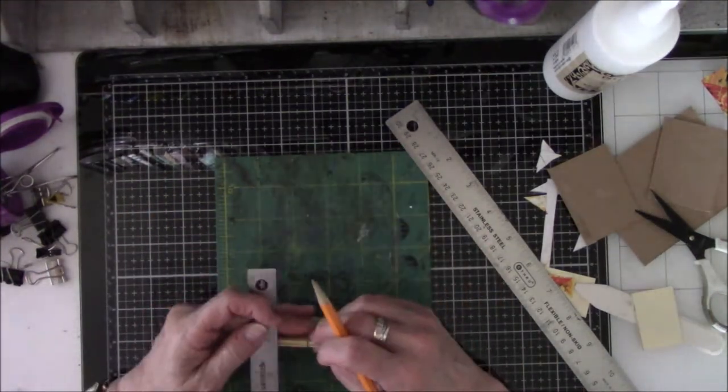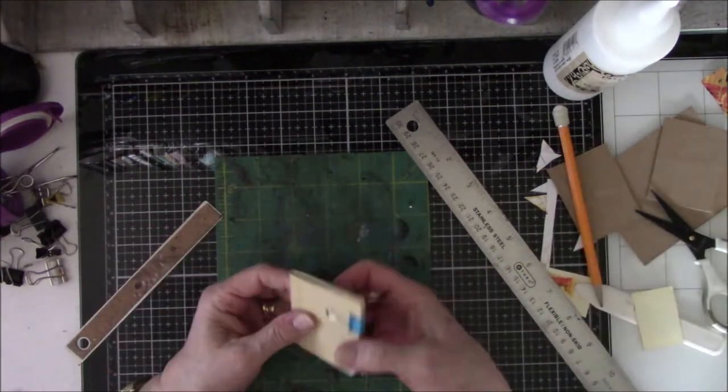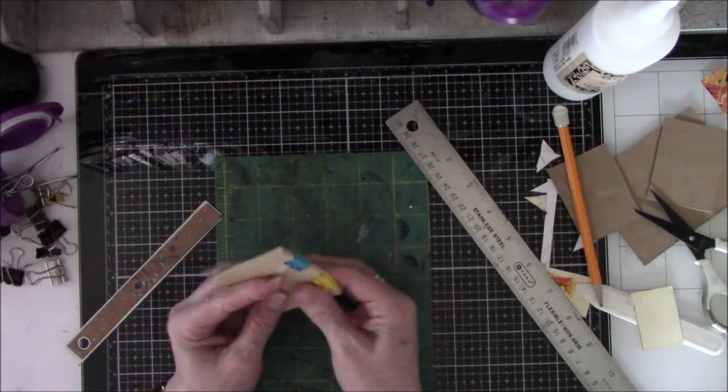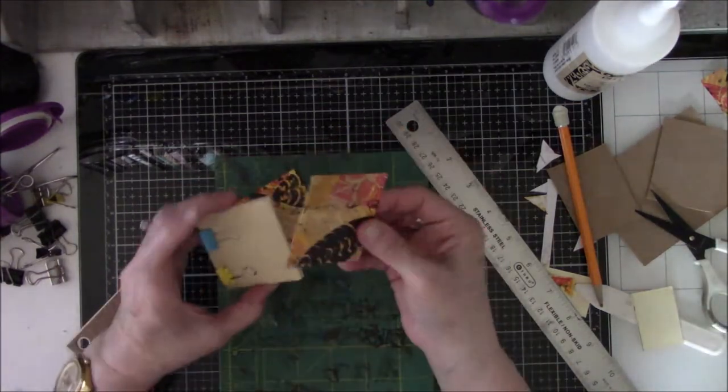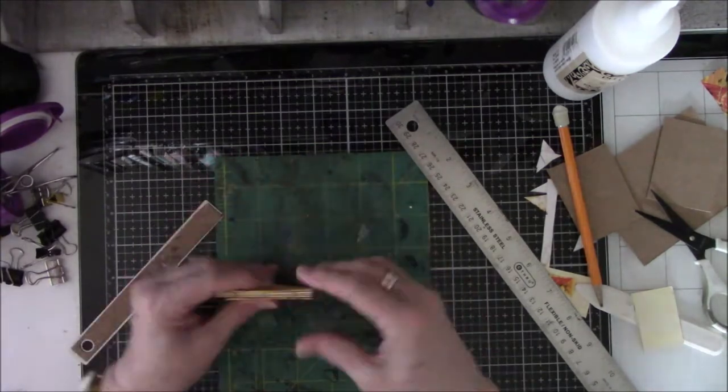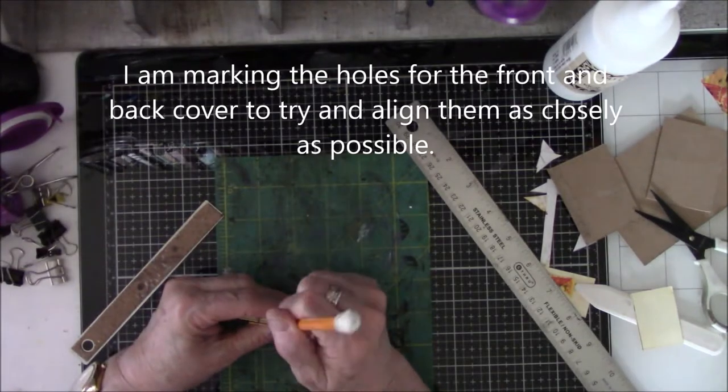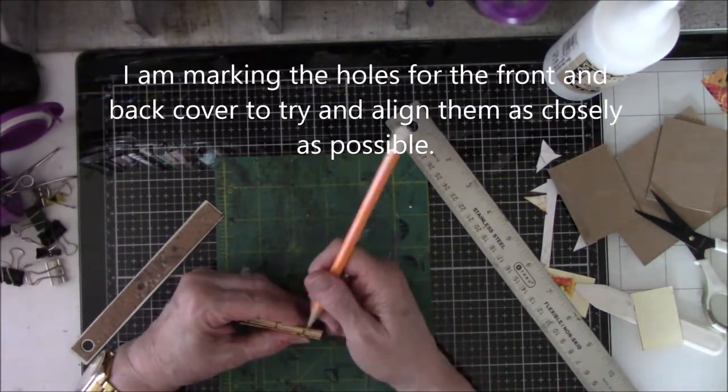There I am marking on the side. I usually try to do anywhere from a quarter of an inch to half an inch away from the edge of the book when I do the eyelets. I'm marking so I can see it on the actual cover itself.